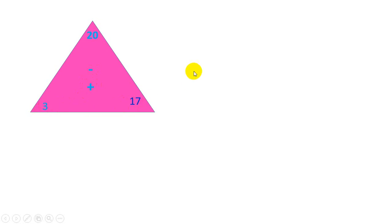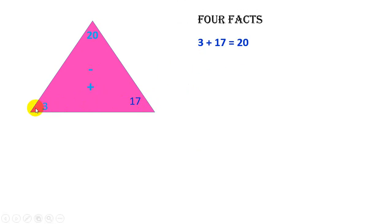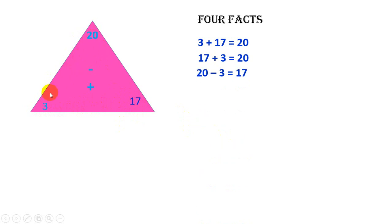So what I am going to find are the four facts. The first one is 3 plus 17 — moving from this corner to this corner, I get 3 plus 17. Now moving back: 17 plus 3 is equal to 20. Then moving from top to bottom: 20 minus 3 is equal to 17, because that is the only number left in the triangle. Then 20 minus 17 is equal to 3.